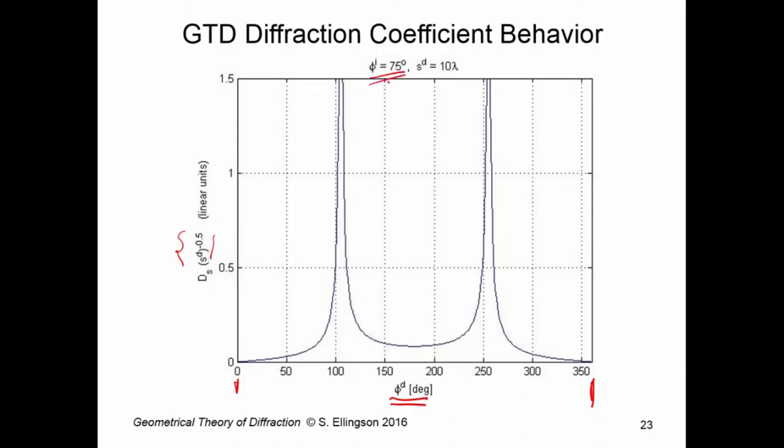I have to pick a particular angle of incidence. So, φ super i here is 75 degrees. So, the problem looks something like this. That would be 75 degrees. Here's the incident plane wave. And I'm picking a distance to the field point of 10 wavelengths. So, the distance here from this to the field point is 10 lambda. And what we find is diffraction coefficient goes from 0 to a maximum, which appears to be infinite, and it is, to a small value, and then back up to infinity, and then back to a smaller value.